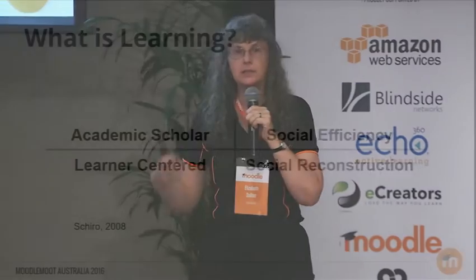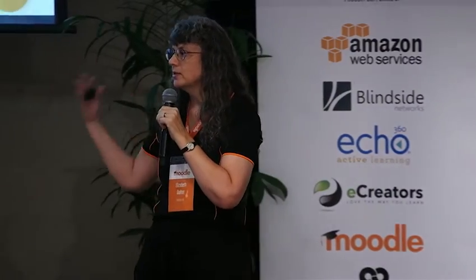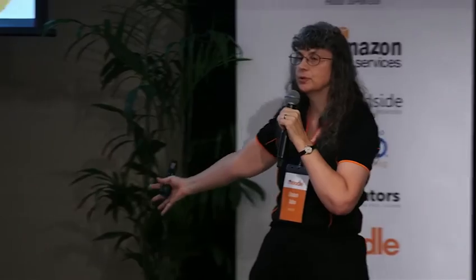The social efficiency model is intended to prepare learners for something in the real world — for a job, usually — or to be able to be constructive, productive citizens, in the most efficient and effective way possible. Many K-12 schools claim to adhere to a more learner-centered model, trying to develop the individual strengths of learners to their full potential. And there is also social reconstruction, where the purpose of education is to make the world a better place by enabling people to go out and improve things.